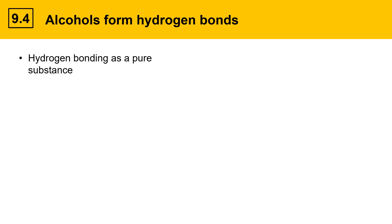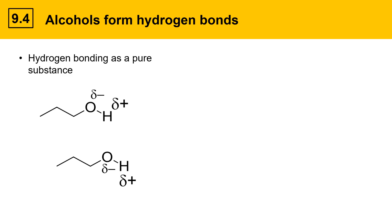Alcohols form hydrogen bonds, and this slide summarizes some of those characteristics. Alcohols can form hydrogen bonds as pure substances. Here's an example of an alcohol showing its large oxygen-hydrogen dipole. If we put another one in, we can see that the dipoles will potentially line up, and that's indicated by a red dotted line showing a hydrogen bond forming between the hydrogen of one alcohol and the oxygen of another. As a pure substance, alcohols form hydrogen bonds.